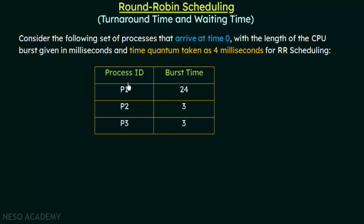We are given a set of three processes with process IDs P1 to P3. Their burst times are: P1 has a burst time of 24 milliseconds, P2 of 3 milliseconds, and P3 also of 3 milliseconds. All these processes arrive at time 0. The time quantum is taken as 4 milliseconds and it follows round robin scheduling.